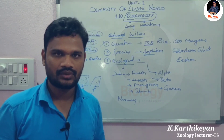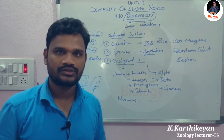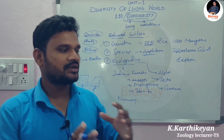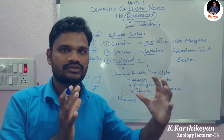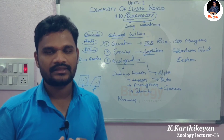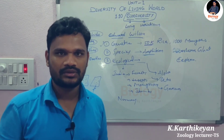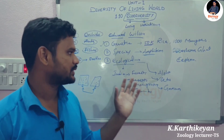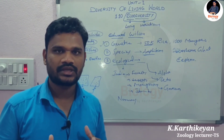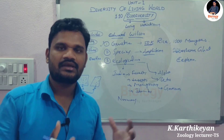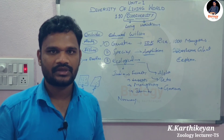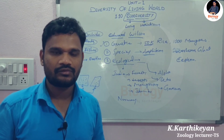Gamma ecological biodiversity is the diversity present between two large ecological systems or ecosystems. For example, India has more forests, more mangroves, and more deserts than Norway — this is also an example of gamma ecological biodiversity. Thank you for watching.